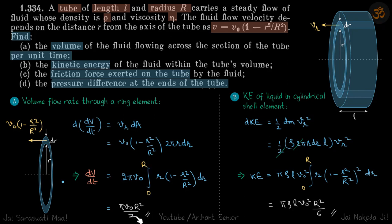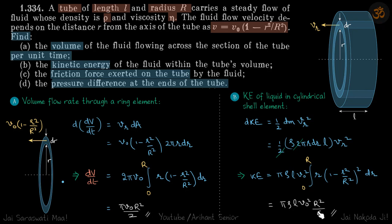For the kinetic energy of the liquid, we again consider a cylindrical shell element. We find the kinetic energy of that ring and then integrate to find the total kinetic energy. The kinetic energy of the cylindrical shell element is equal to ½·dm·v², where v is the local velocity and dm equals ρ times the volume of the element, which is ρ·2πr·dr·L. We put the limits from 0 to R and this gives our answer.